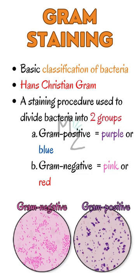Gram staining is used for the basic classification of bacteria based on cell wall structure. It was developed by Hans Christian Gram — do you know who he was? He was a Danish bacteriologist or physician.